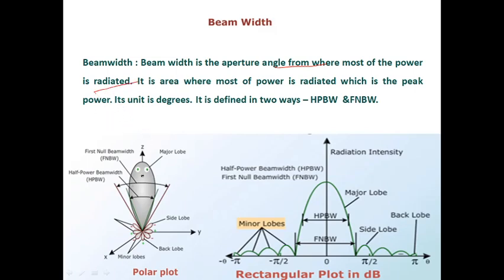Looking at this diagram, you can identify it is our radiation pattern taken in a polar plot. The same radiation pattern is also plotted in a rectangular coordinate system. In the polar plot, the main lobe is where maximum and constant energy is radiated by the antenna. In the rest of the areas, the amount of power radiated is very low.